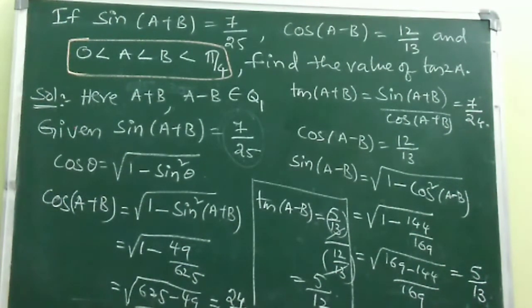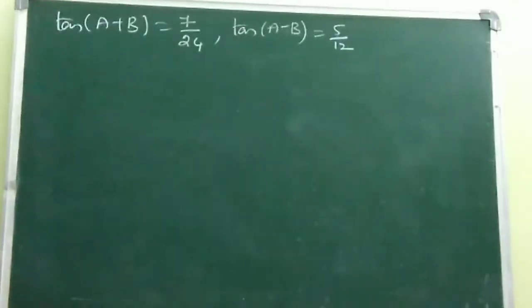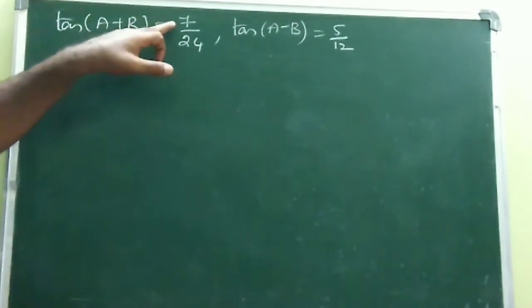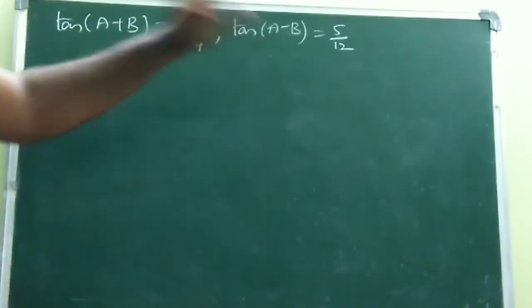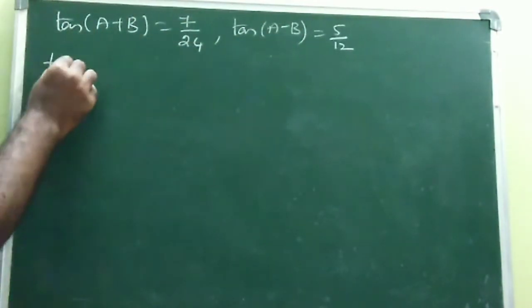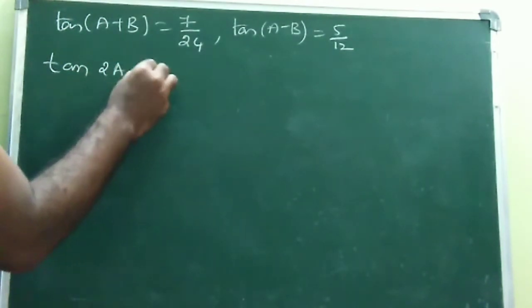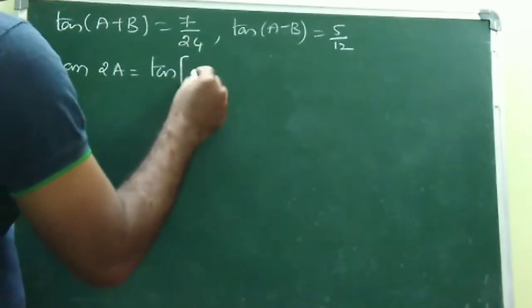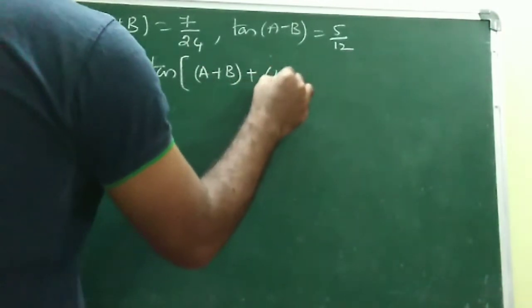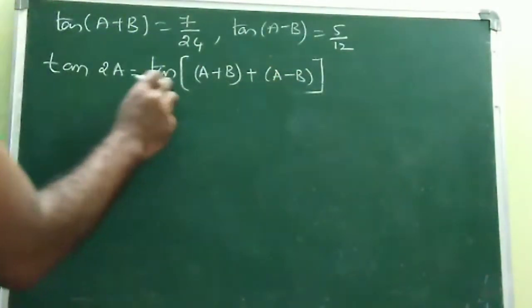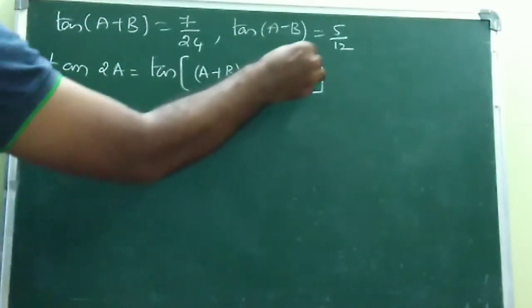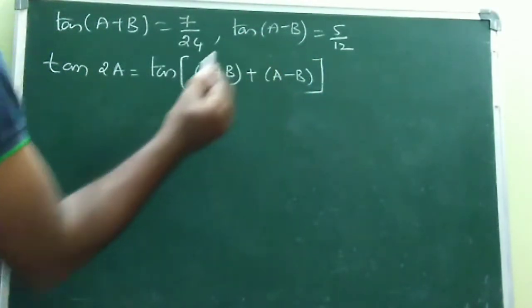We need tan 2A. The technique: write 2A = (A+B) + (A-B). Then tan 2A = tan[(A+B) + (A-B)], which is in the form tan(α + β). Using the formula: tan(A+B) + tan(A-B) divided by 1 - tan(A+B)·tan(A-B), substituting 7/24 and 5/12.